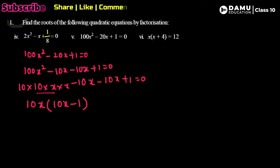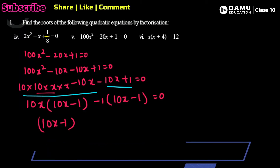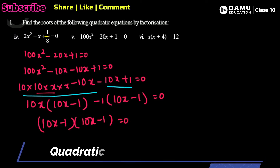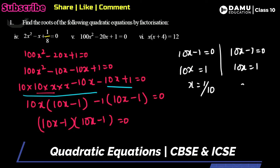Grouping these terms: take common factor 10x from the first group giving 10x(10x - 1), and take common -1 from the second group giving -1(10x - 1). This gives (10x - 1)(10x - 1) = 0. Either 10x - 1 = 0, so x = 1/10. These are two identical roots, both equal to x = 1/10.